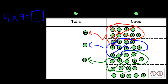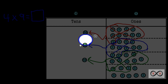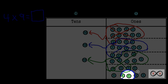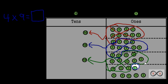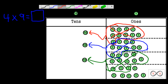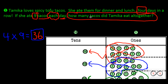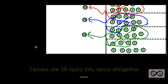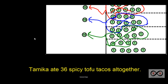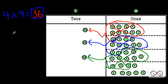Now we can total this all up. We have ten, twenty, thirty — three tens is thirty. We continue counting by ones: thirty-one, thirty-two, thirty-three, thirty-four, thirty-five, thirty-six. So the product of four and nine is indeed thirty-six. Now we know four times nine equals thirty-six. Tamika ate thirty-six spicy tofu tacos altogether — absolutely correct. We have our equation, our pictures shown on the place value chart, and our words in a complete sentence. A well-rounded answer.